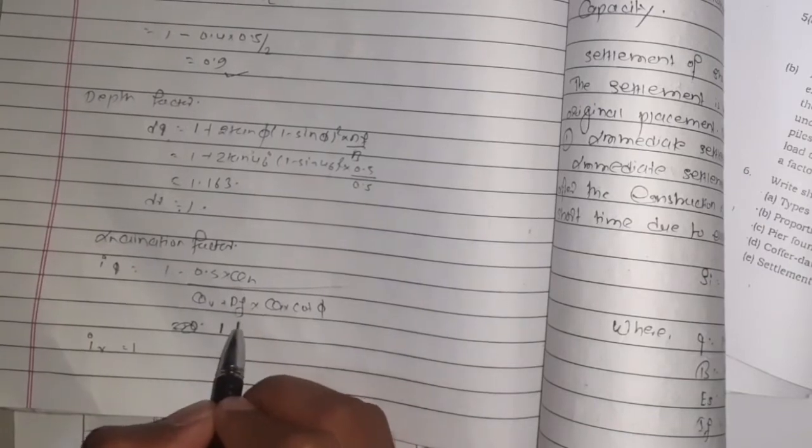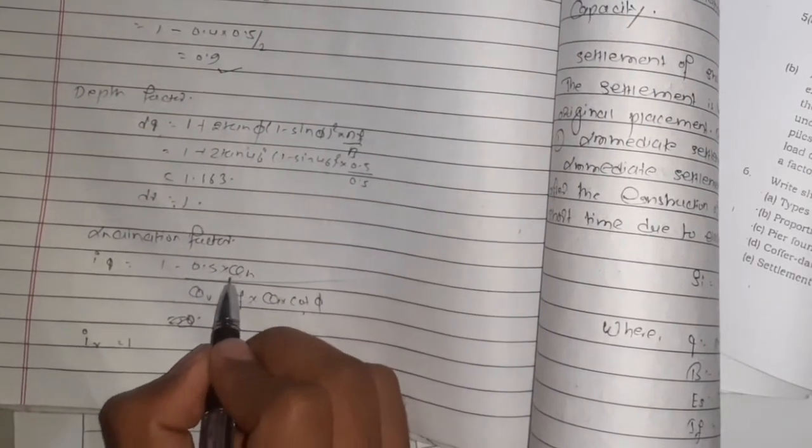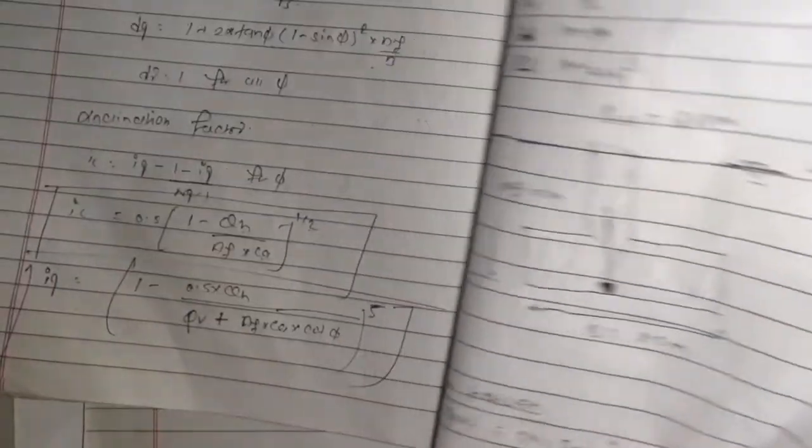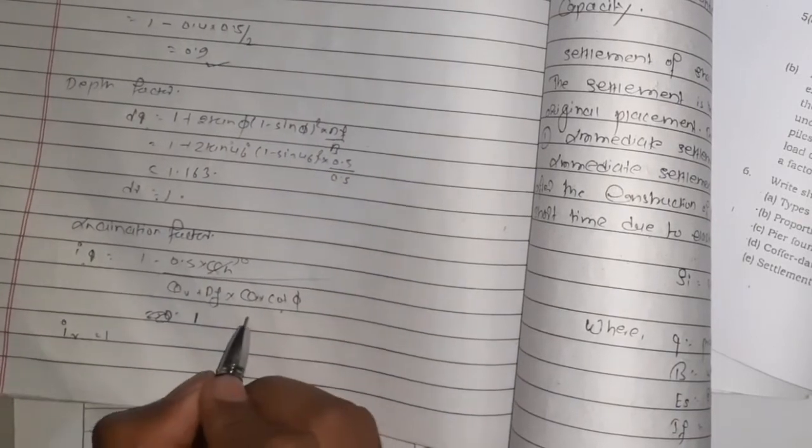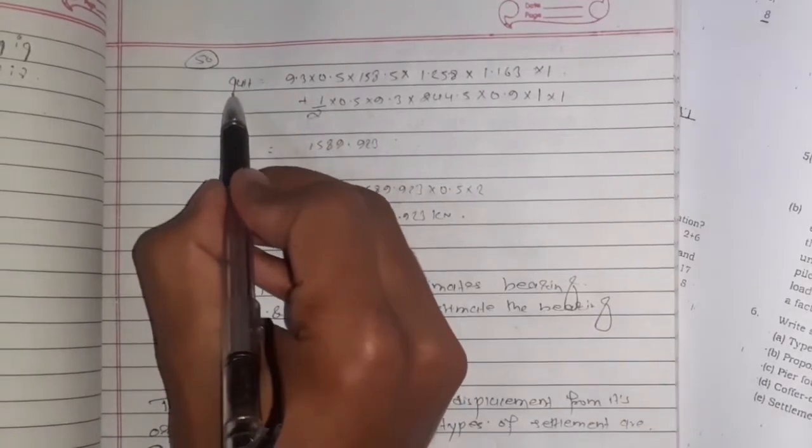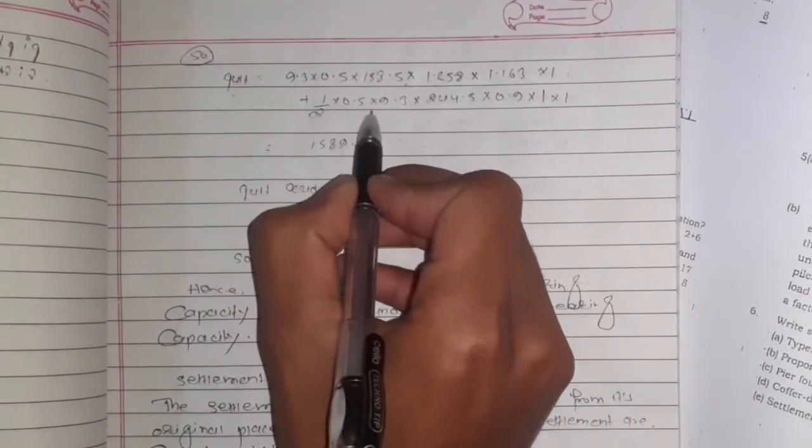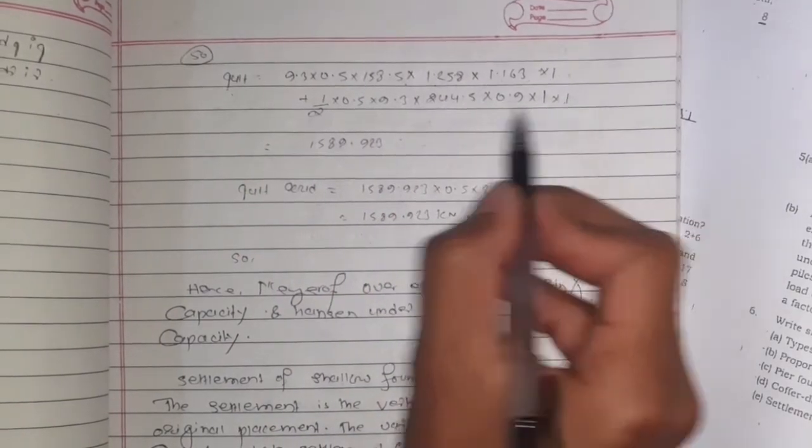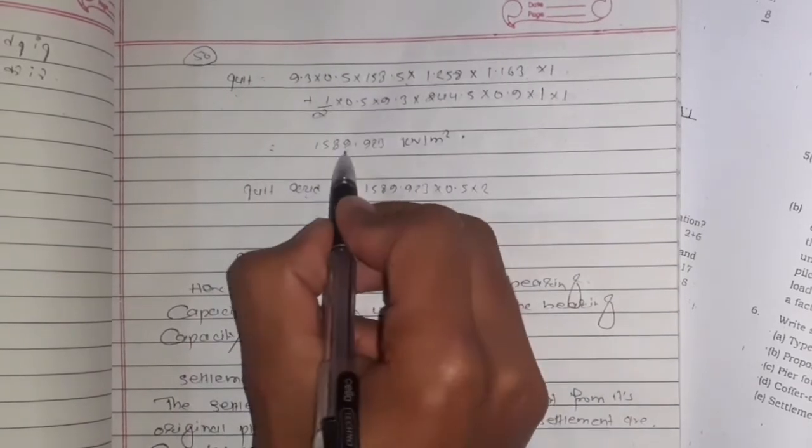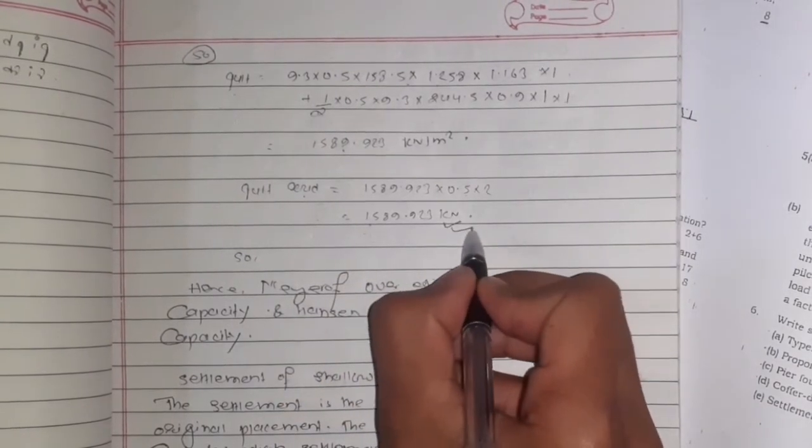For Terzaghi, dγ = 1. Inclination factors: iq = (1 - 0.5·qh/(qv + af·ca·cotφ))^φ. Since the load is vertical and horizontal component is zero, iq = 1. q ultimate = 9.3·158.5·1.25·1.163·1 + 1/2·0.5·9.3·244.5·0.9·1 = 1589.923 kN/m². Ultimate load = q ultimate·area = 0.5·2 = 1589.923 kilonewton.